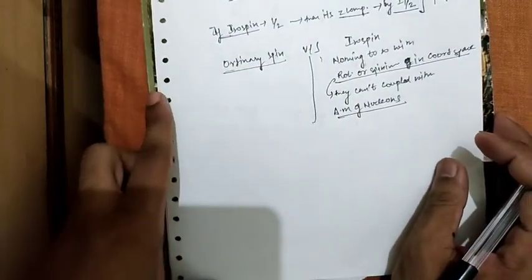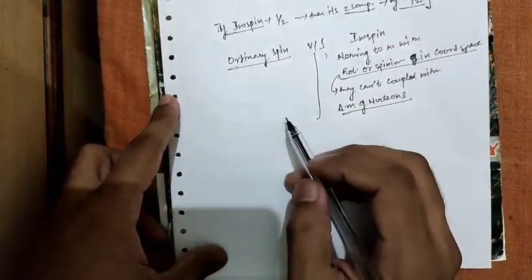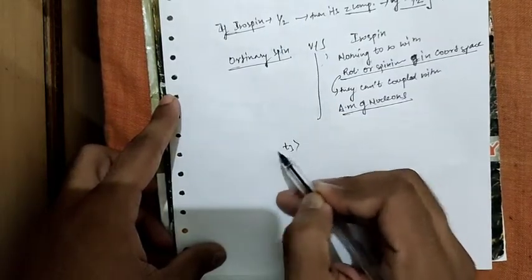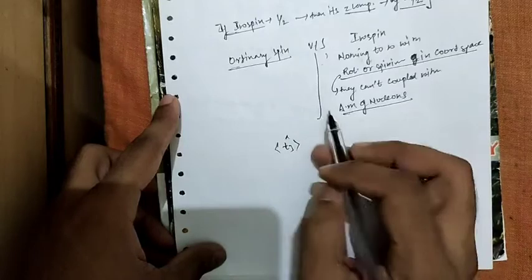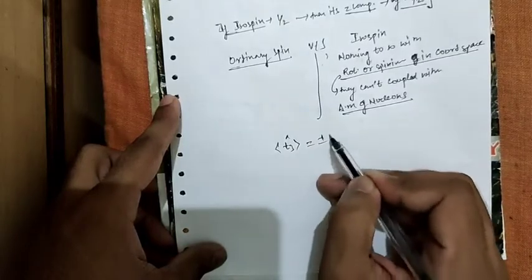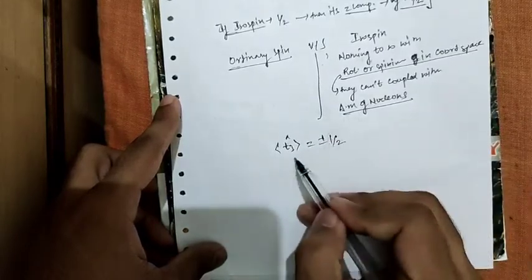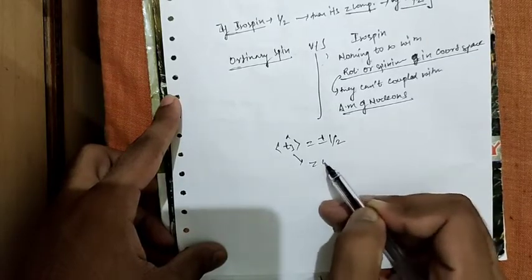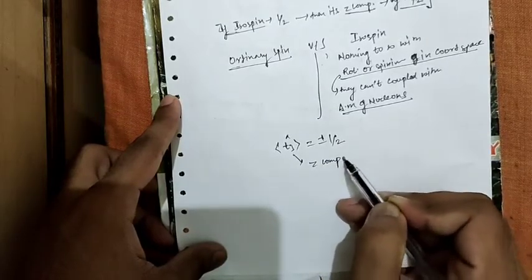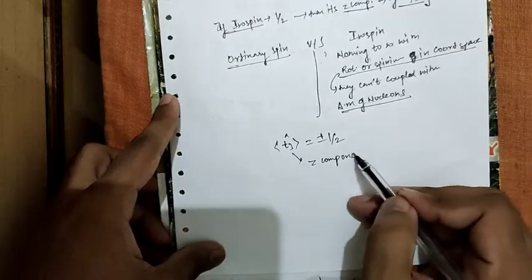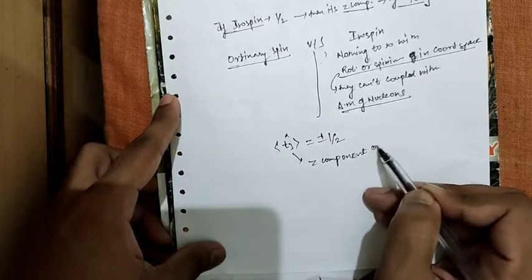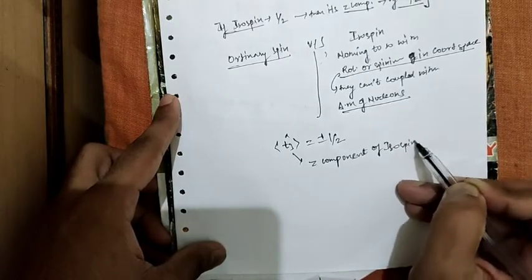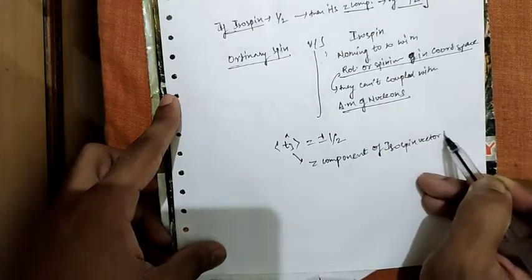In the upcoming lecture, we will denote the nucleon by the symbol T3, which equals plus or minus one-half. T3 is the third or z component of the isospin vector T.